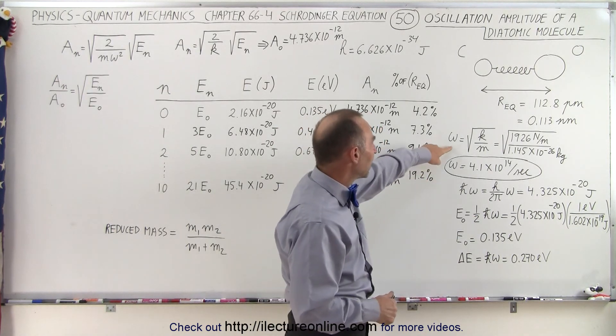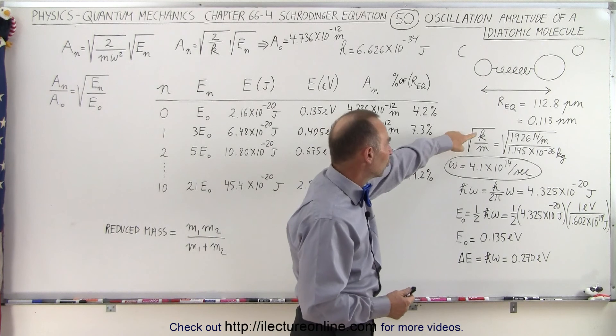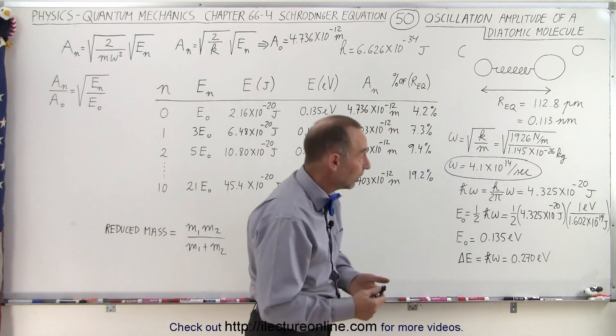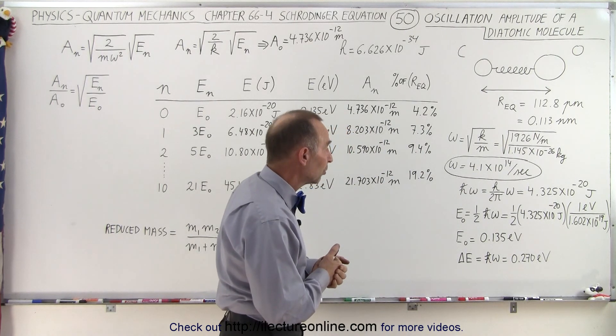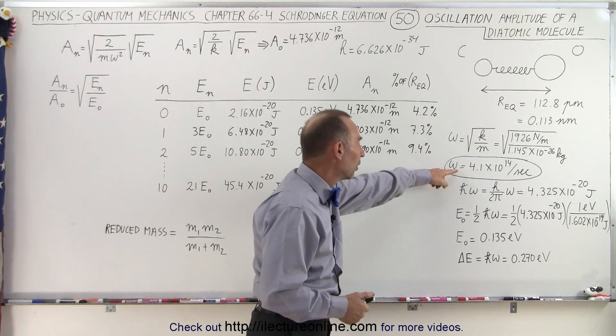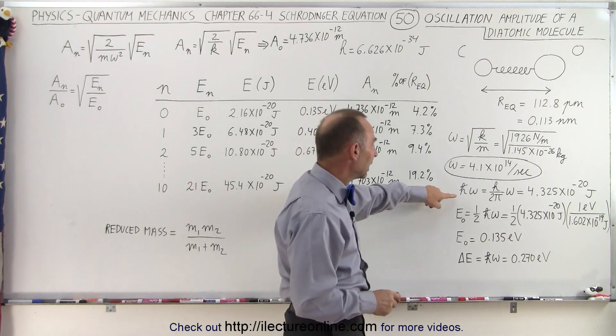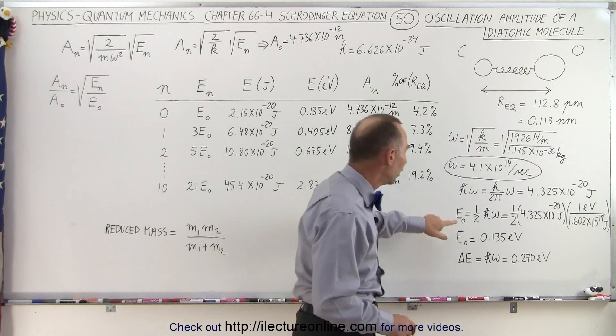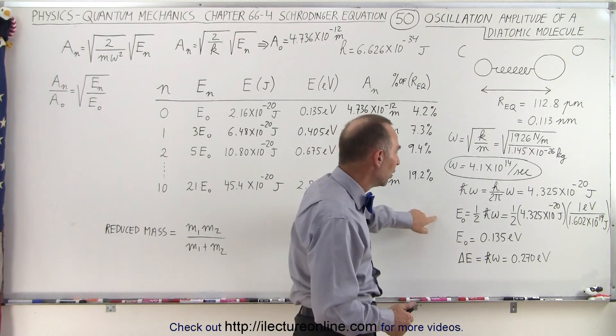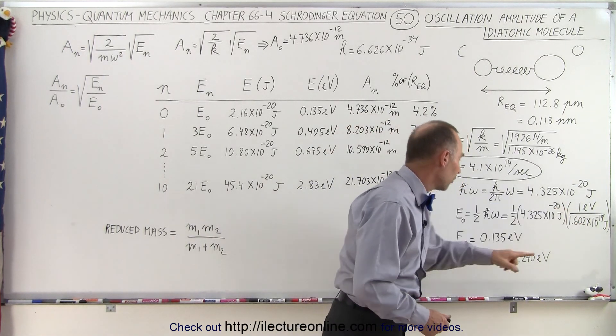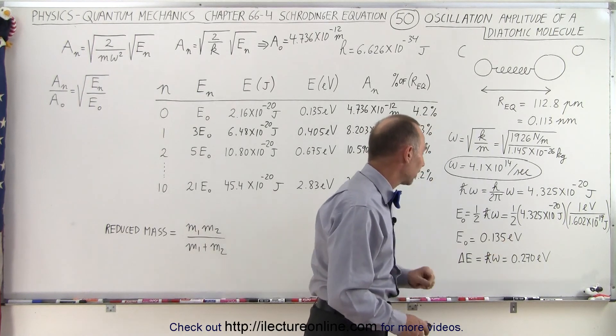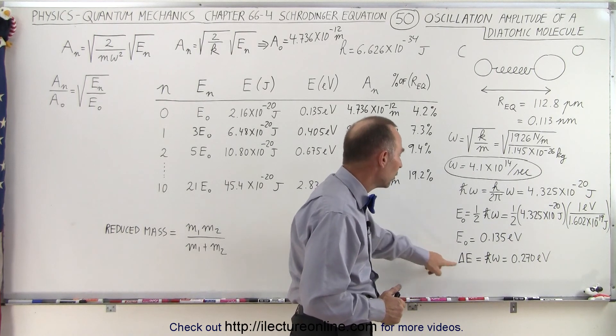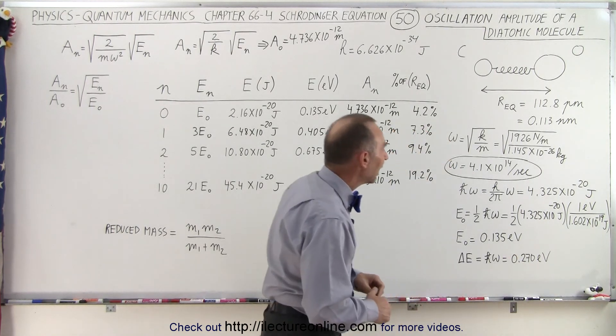Now we can also calculate the frequency of that, which is the square root of k over m, which happens to be 4.1 times 10 to the 14 per second. It's quite a bit of oscillations per second. Of course this is radians per second. And then if we calculate h bar omega, it's about 4 times 10 to the minus 20 joules. Take half of that for the zero energy level and convert to electron volts, it's 0.135 electron volts. And then the energy jumps from one quantum state to the next would be twice as much, or 0.27 electron volts.